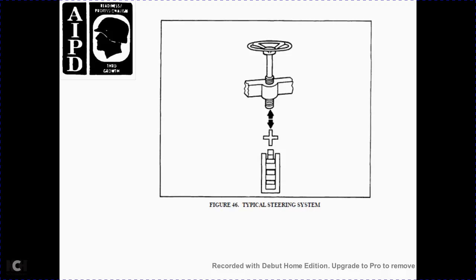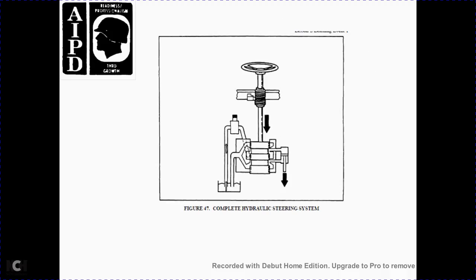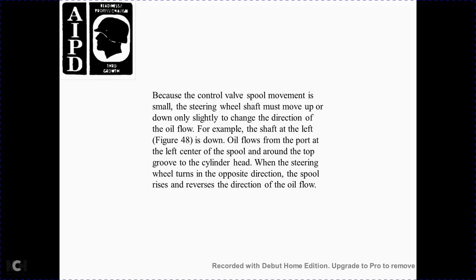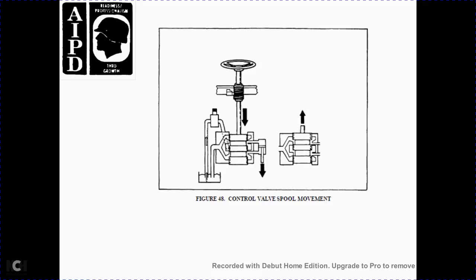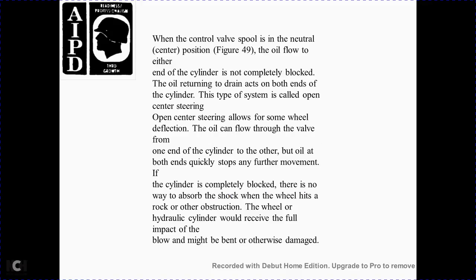Figure 46 shows the typical steering system. Figure 47 shows the complete hydraulic steering system. The control spool moves slightly with small steering wheel movements, directing the oil flow. For example, shifting left as in Figure 48, the oil flows to the left port through the control center of the spool, around the top groove of the cylinder head. When the steering wheel is turned in the opposite direction, the spool reverses, reversing the direction of oil flow. Figure 48 shows the control valve spool movement. When the control valve is in the neutral center position, shown in Figure 49, the oil flows to either end of the cylinder. This type of system is called open center steering.